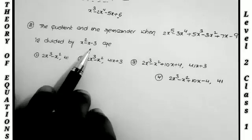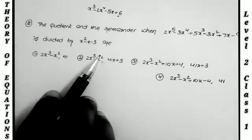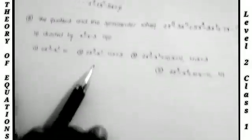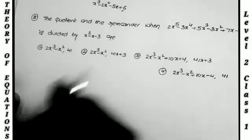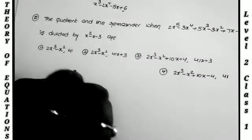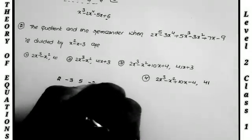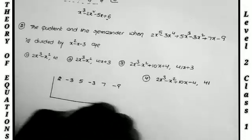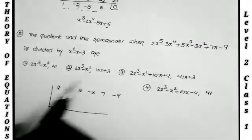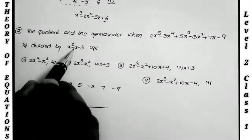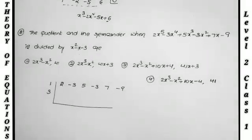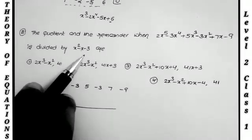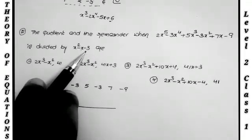The next question: find the quotient and remainder when the equation is divided by x² minus x minus 3. Here also we do the Horner division, but we take it by the quadratic expression. The processor: take the quotients from the first equation — 2, minus 3, 5, minus 3, 7, minus 10. For the Horner division by this quadratic, the second quotient is minus 1 but we take plus 1, and the constant is minus 3 but we take plus 3. We reverse the signs of the coefficients of the second and third terms.